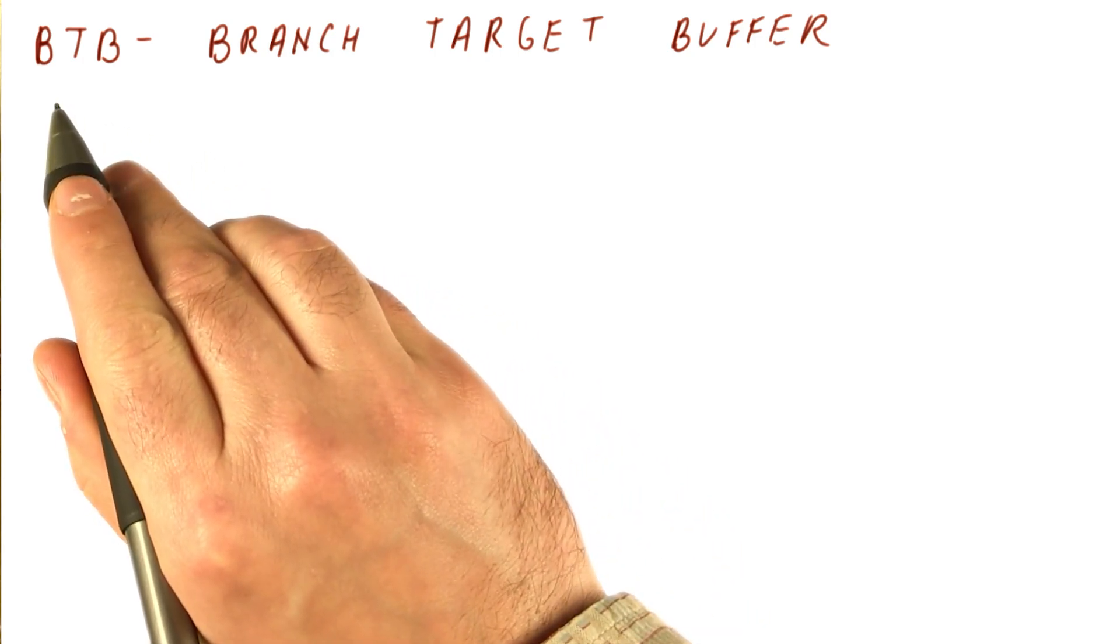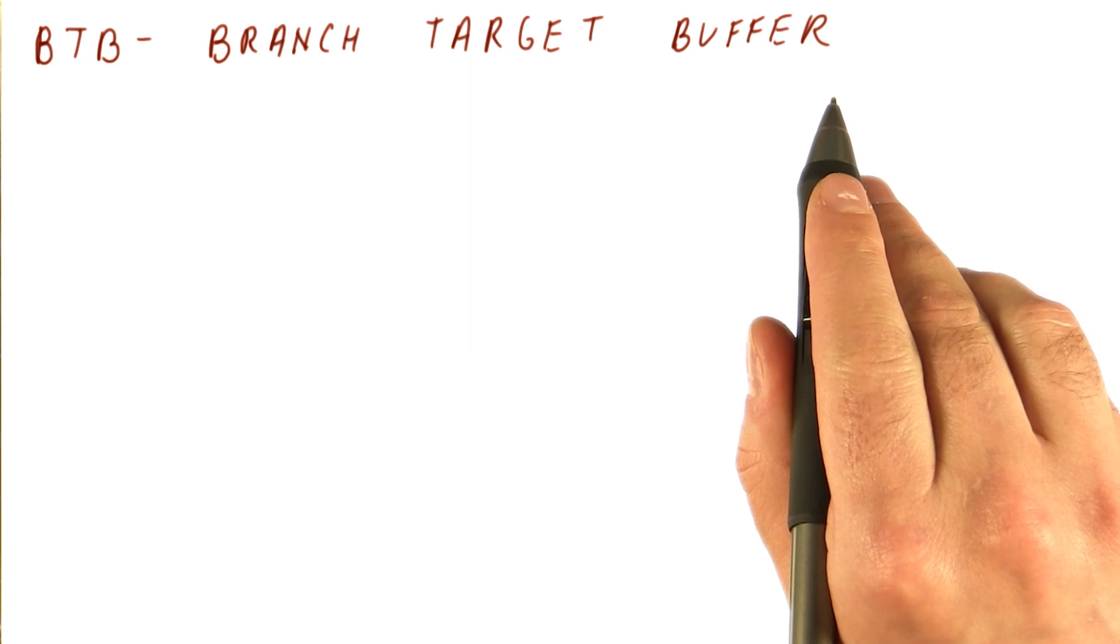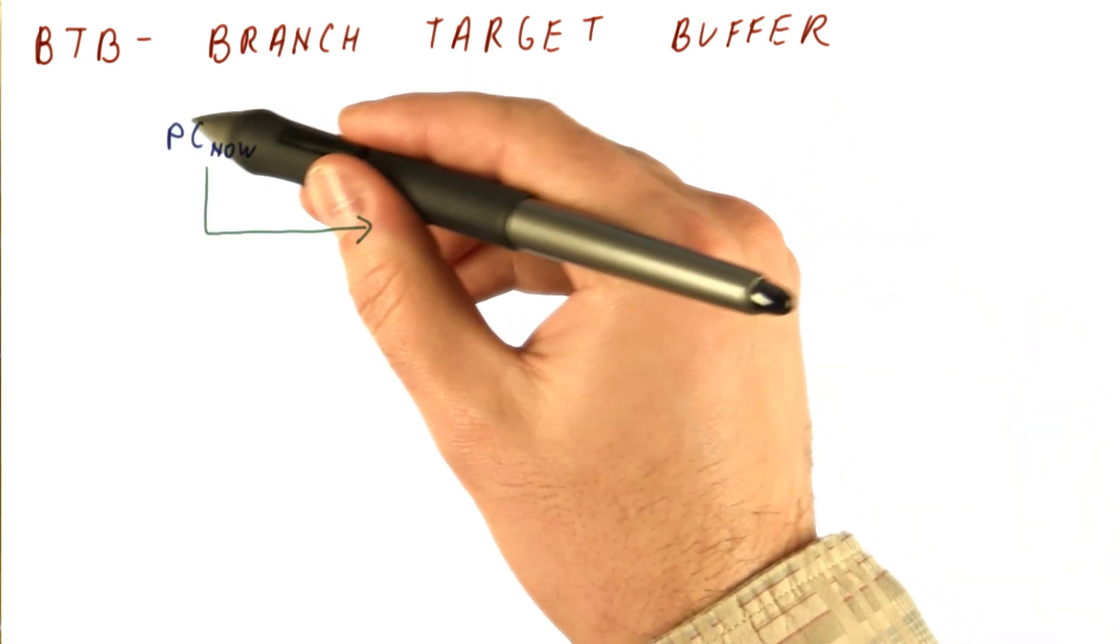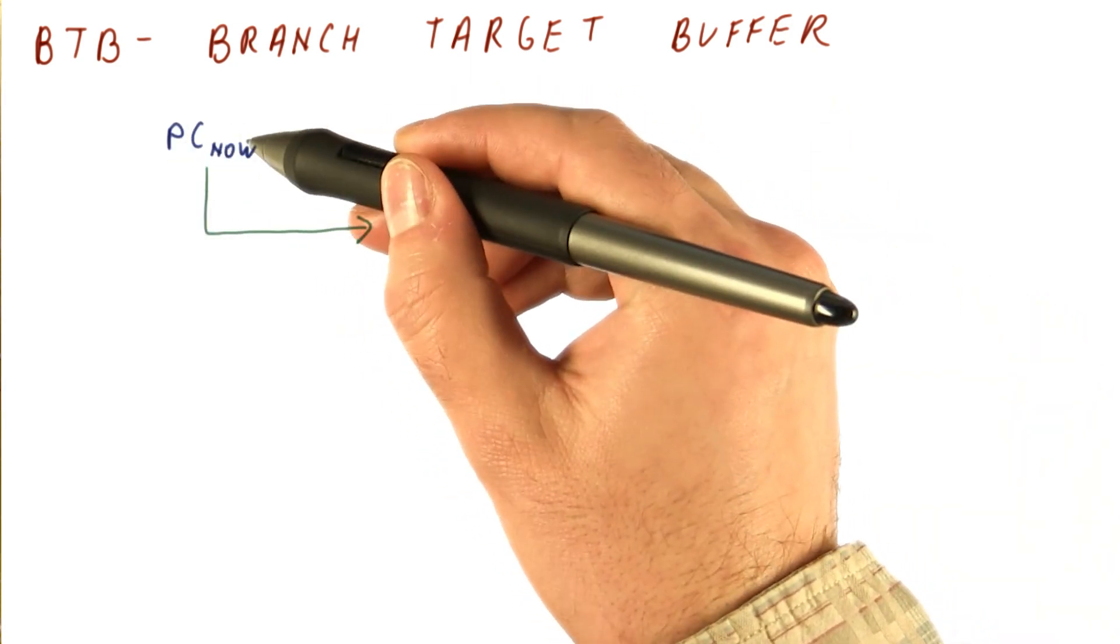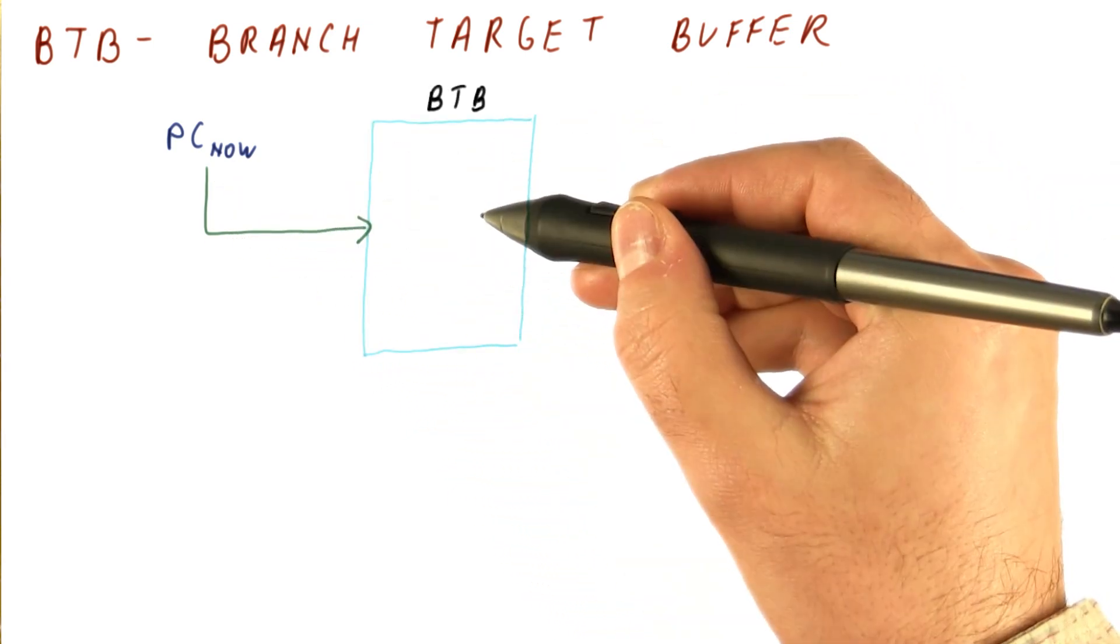So the simplest predictor that uses history is called the branch target buffer. What it does is it takes the current PC of the branch and uses that to index into a table which we call the BTB.